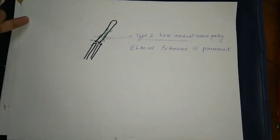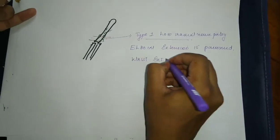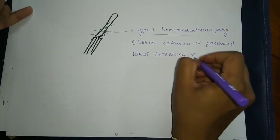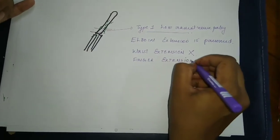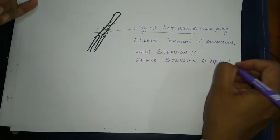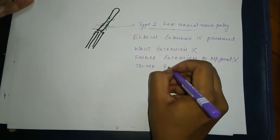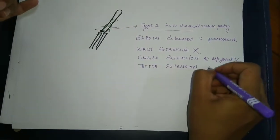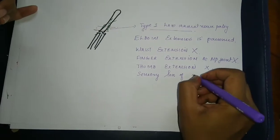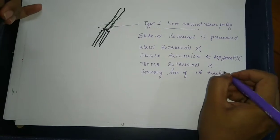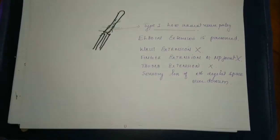In Type 1 low radial nerve palsy, all other movements are lost: wrist extension is affected, finger extension at the MP joint is affected, and thumb extension is affected. There is also sensory loss over the first digital space on the dorsal aspect of the hand.